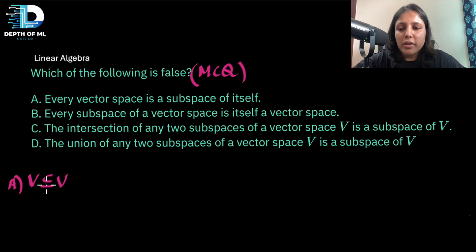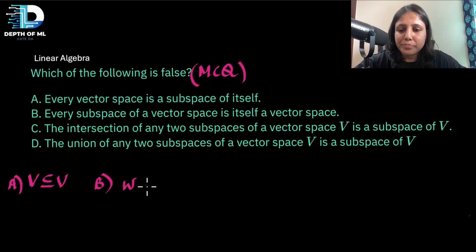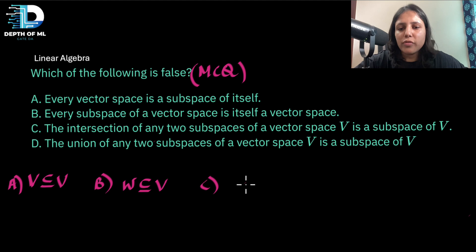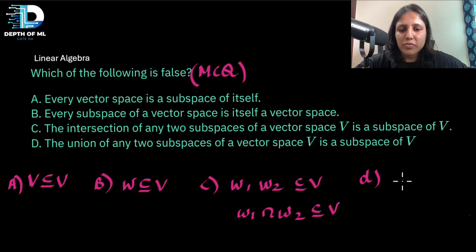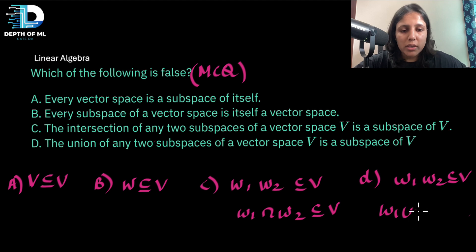The second statement asks whether every subspace of a vector space is itself a vector space — so if W is a subspace of V, is it a valid vector space? The third asks whether the intersection of two subspaces W1 and W2 of V is also a subspace of V. The fourth asks whether the union W1 ∪ W2 is a subspace of V.